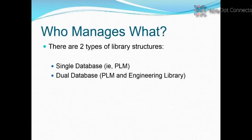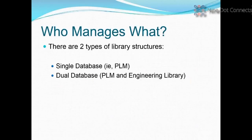With all these parameters, how do we organize this? There are really two different types of library structures. First is the single database, where everything is put into one large database, usually under a PLM. Then there's the dual database, where you've got a PLM and an engineering library. A lot of times this forms because the PLM came about as one system and the engineering library came about as another, or the PLM has always been there and you're now trying to create a library alongside it — and it can be really hard to work into an existing PLM.